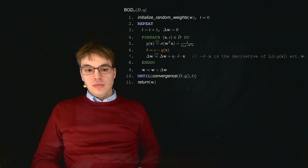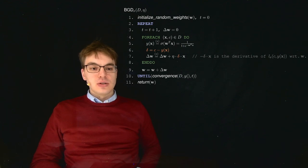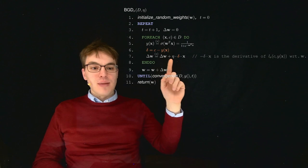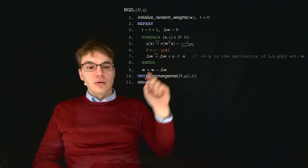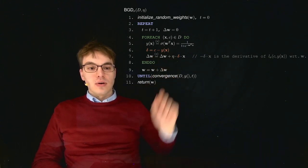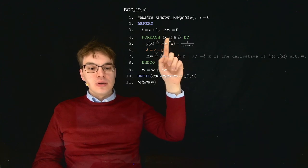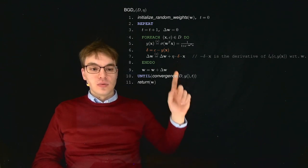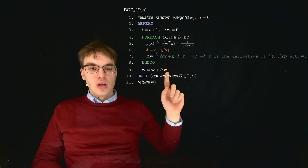This is again simple computations. I just want to raise awareness that what we do here is actually summing up all our Delta W values for all our examples. So for each example, and then in the end we get one large Delta W, this one over here.